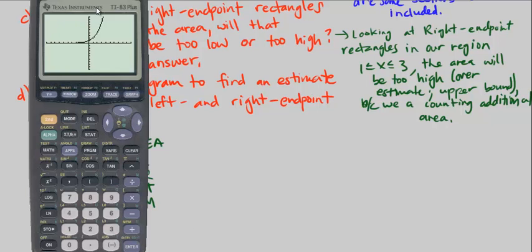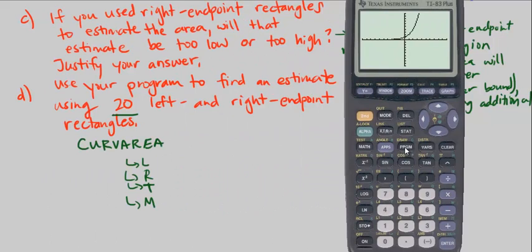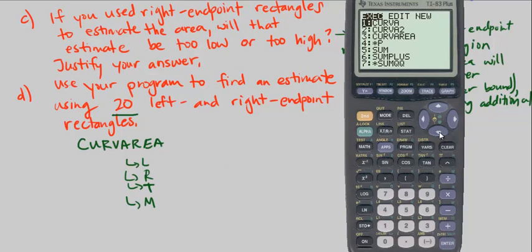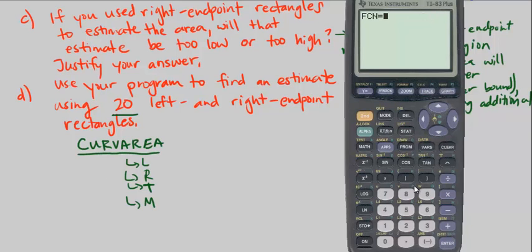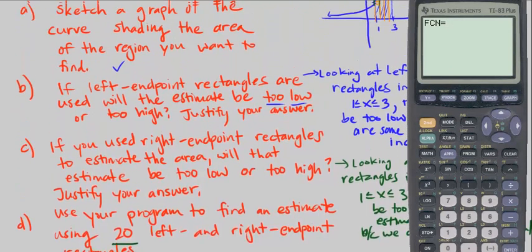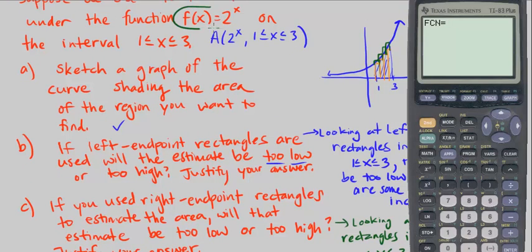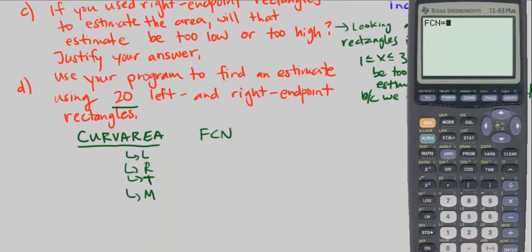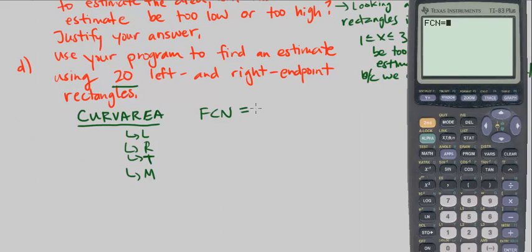So if you have your calculator, go ahead and go to your program, Curve Area, run it. Curve Area is the program, it's going to ask for the function, well what is our function? Well, if you look here at the problem, our function is given is f of x is equal to 2 to the x.